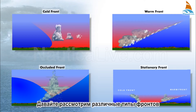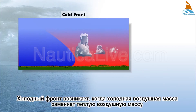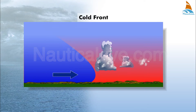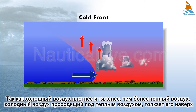Let's look at the various types of fronts. A cold front occurs when a cold air mass replaces a warm air mass. Because the cold air is denser and heavier than warmer air, the wedge of cold air pushes under the warm air, lifting it up.